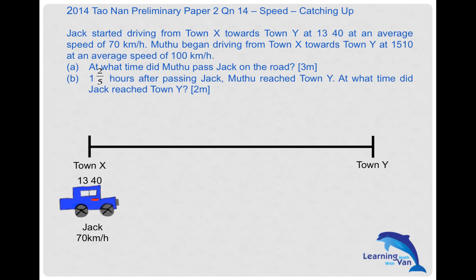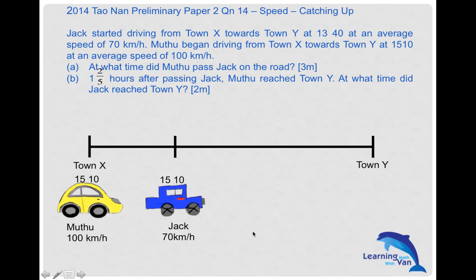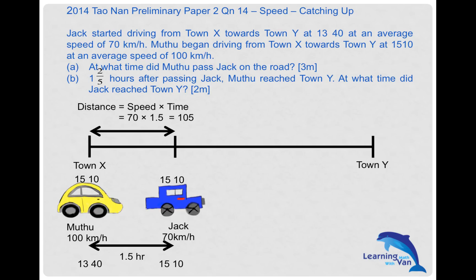After some time, Mutu began driving from Town X towards Town Y at 1510, by which time Jack has already covered a certain distance. The time from 1340 to 1510 is one and a half hours. So applying the formula — distance equals speed times time — the distance Jack covered before Mutu's journey started is 105 kilometers.